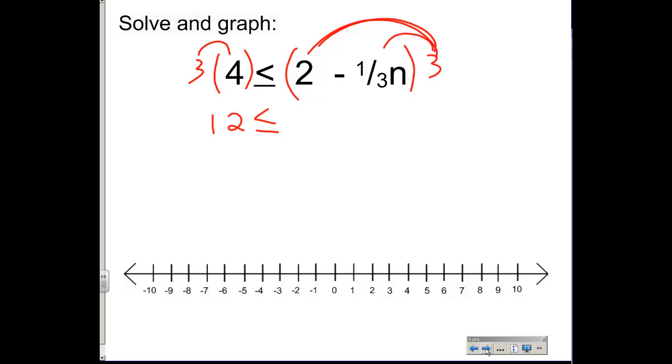12 is less than or equal to 3 times the 2 is going to give us a 6, and 3 times 1 third, that's really 3 times the 1 on the top, and then divide that by 3 on the bottom, and that becomes a 1. Don't forget to bring down your subtraction. So that becomes 1n.